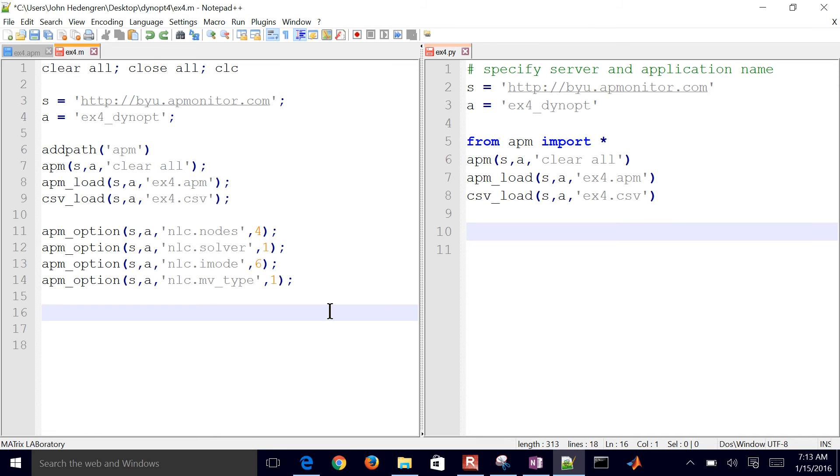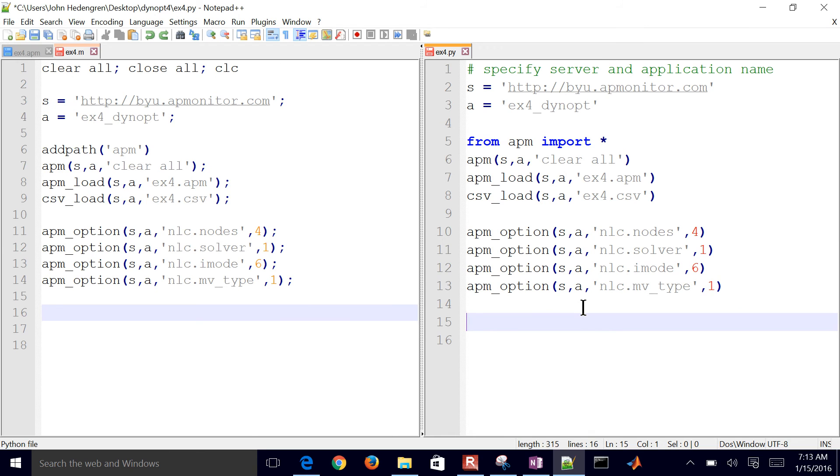Now, I have a couple options I want to insert. This just defines, like for example, the collocation nodes, the solver that I'm going to use. iMode6 means dynamic optimization, and MVType1 means linear interpolation between the manipulated variable points.